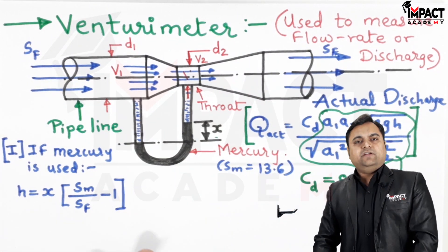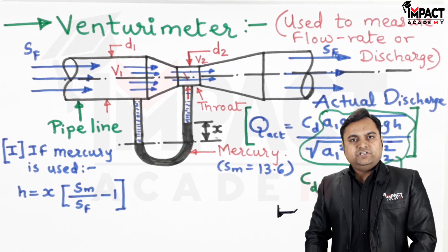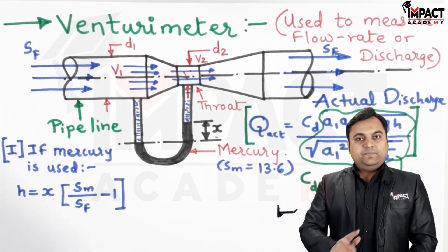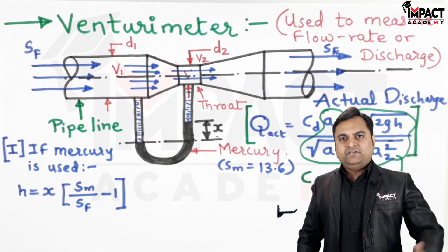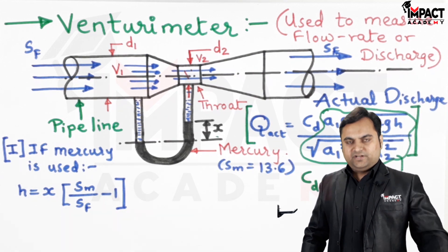This can take any value, like for example if the flowing liquid is water, Sf value will be 1. If it is oil, the value can be 0.8, 0.9 or any other given value.